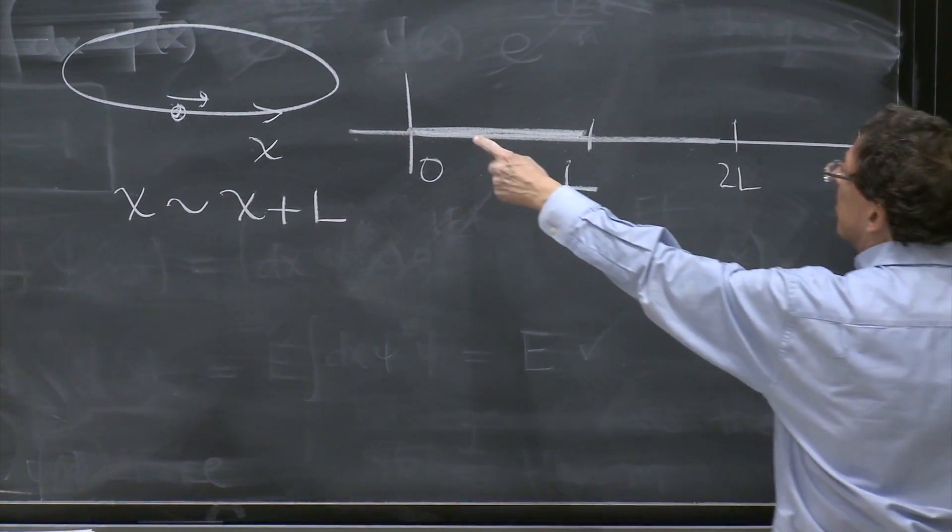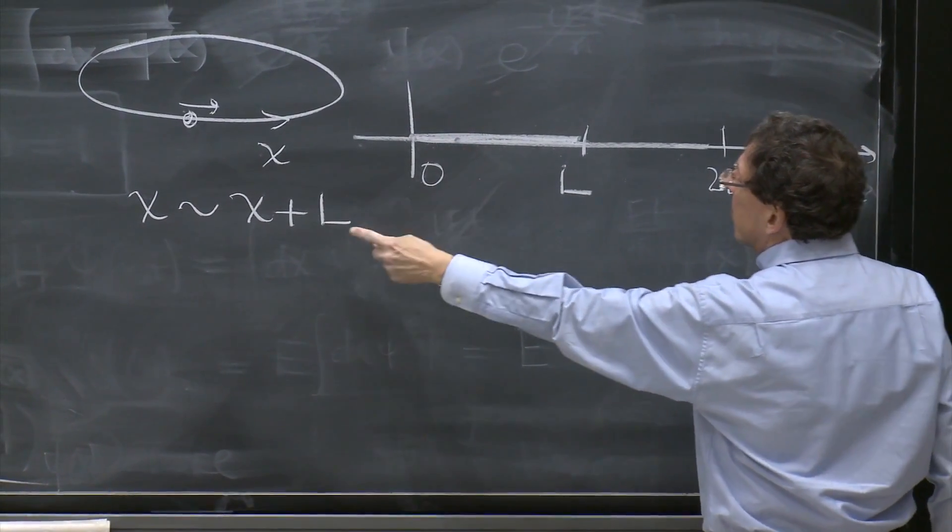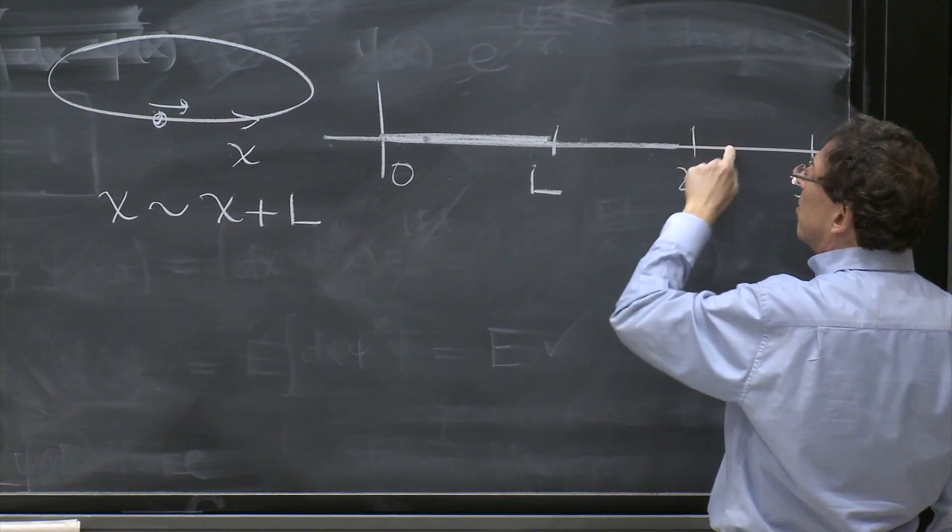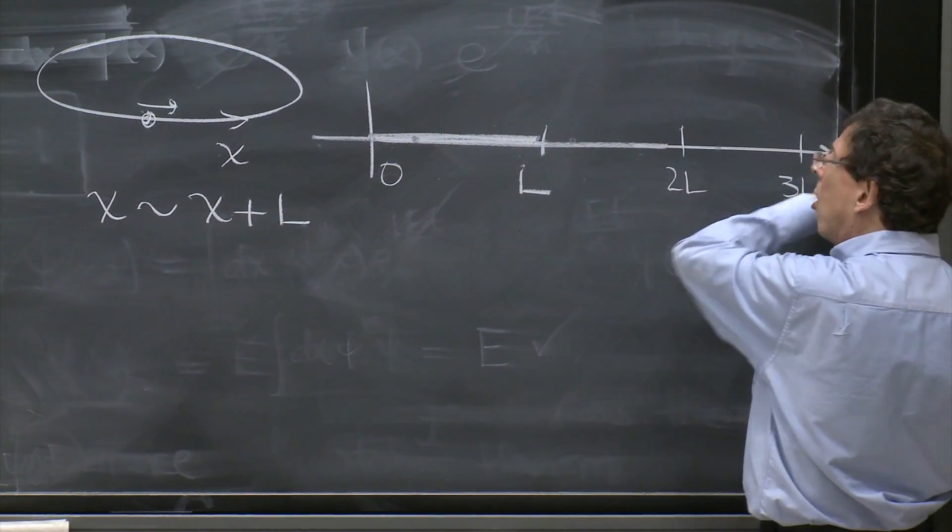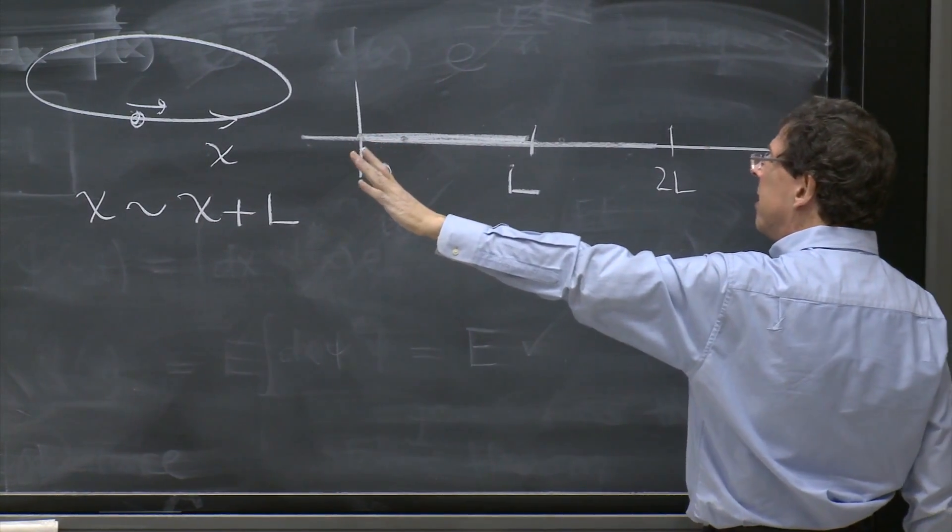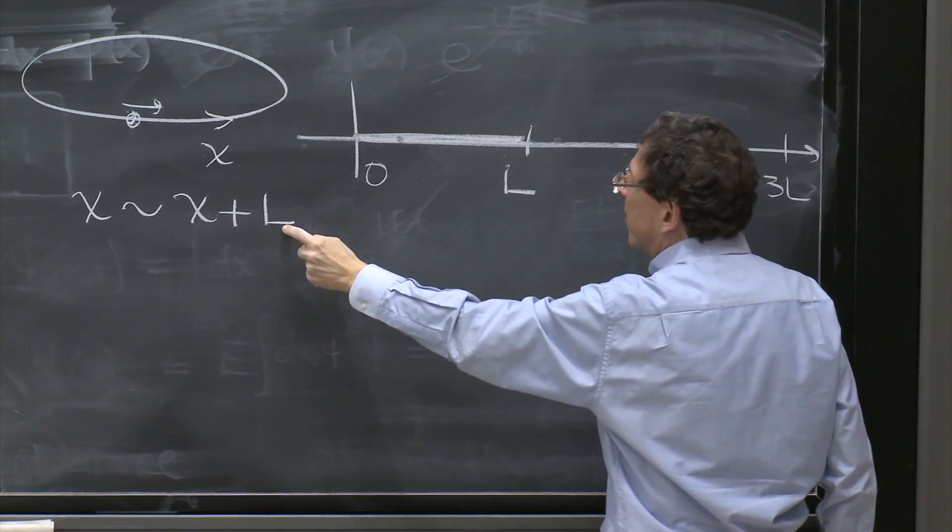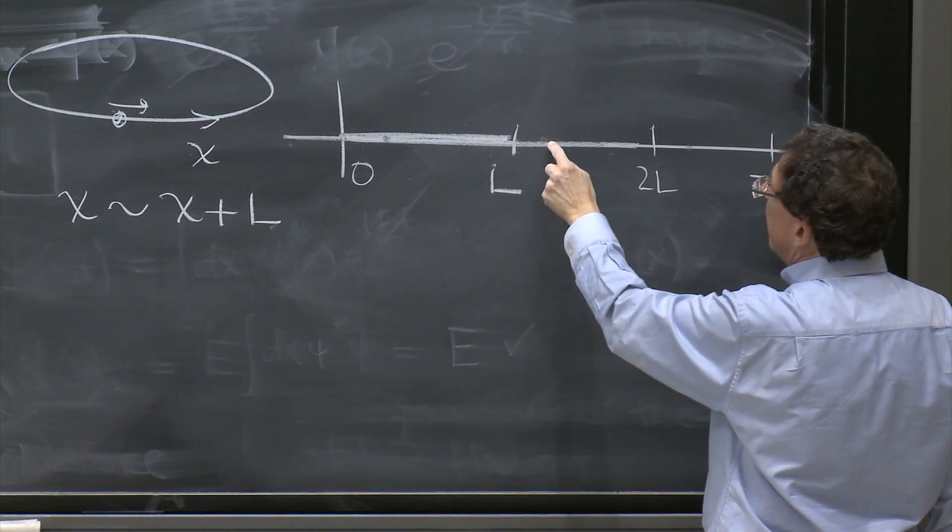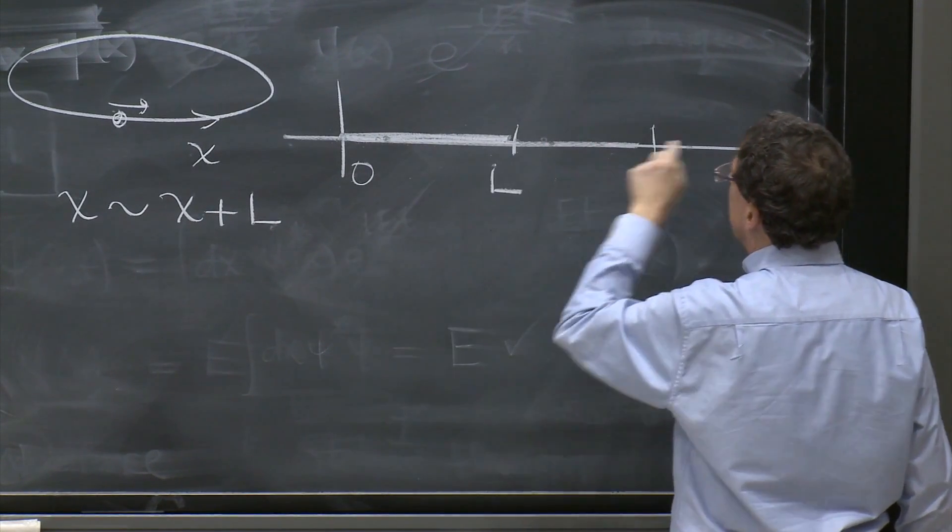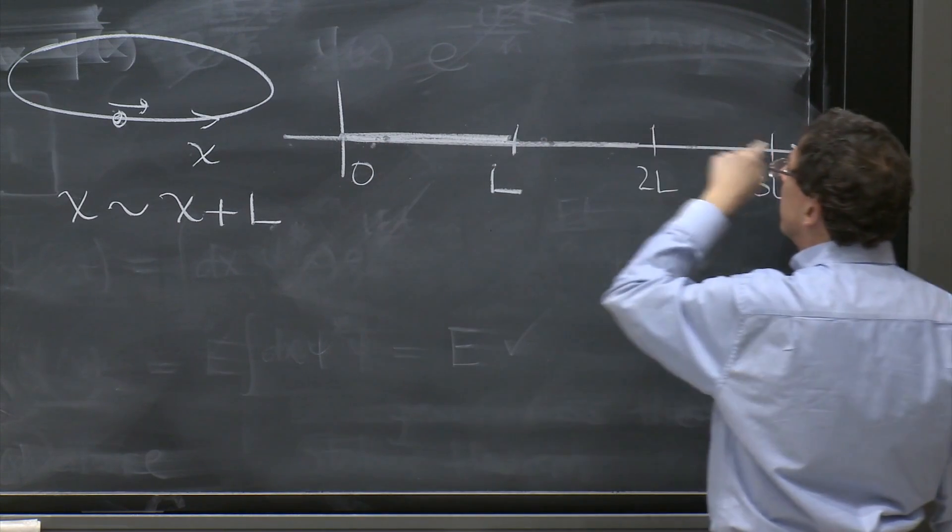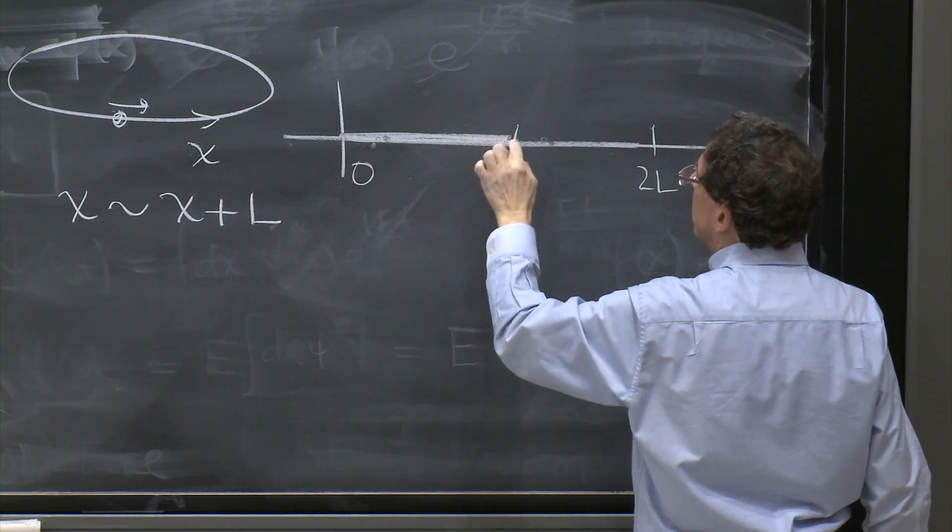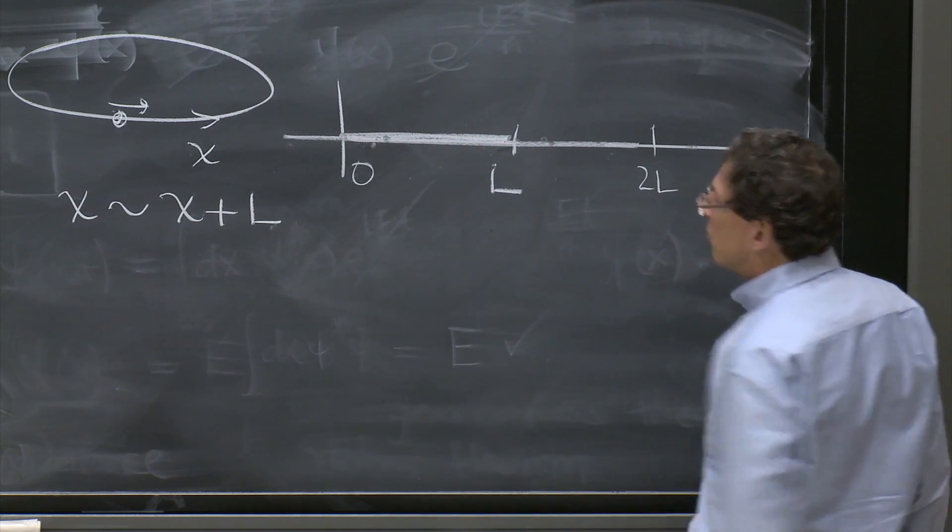We say that any point is the same as the point in which you add L. So the circle is the whole infinite line with this identification. Because every point here, for example, is the same as this point. This point is the same as that point. So at the end of the day, everything is equivalent to this piece, where L is equivalent to zero.